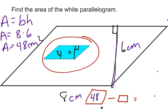Next, we need to find the area of the smaller parallelogram. In this case, again, area equals base times the height. We have a base of 4 and a height of x.